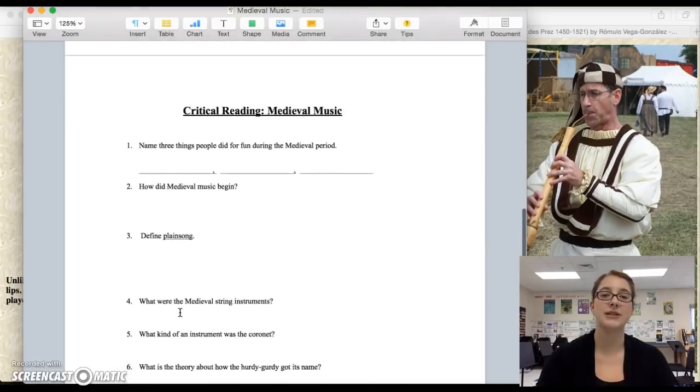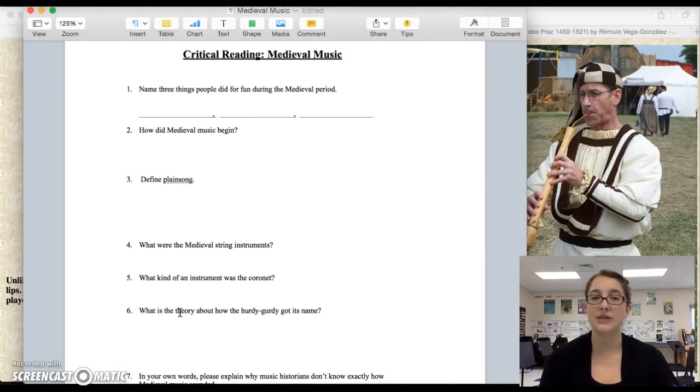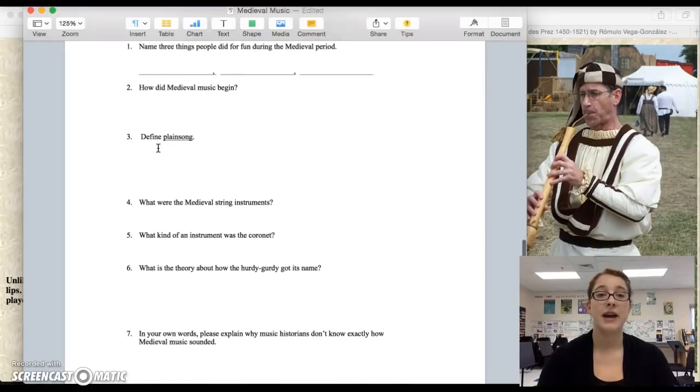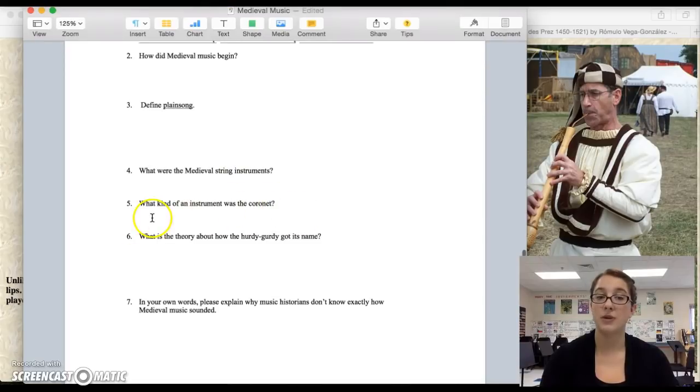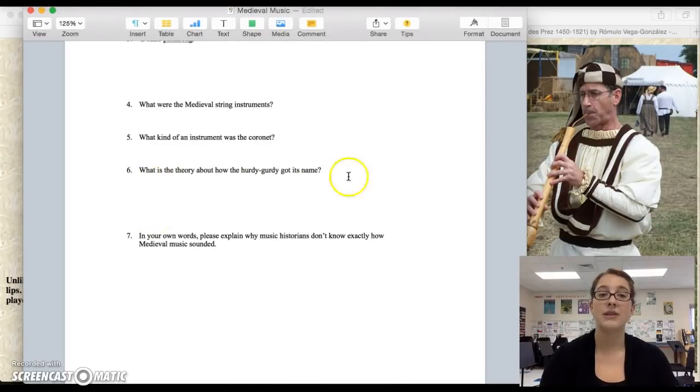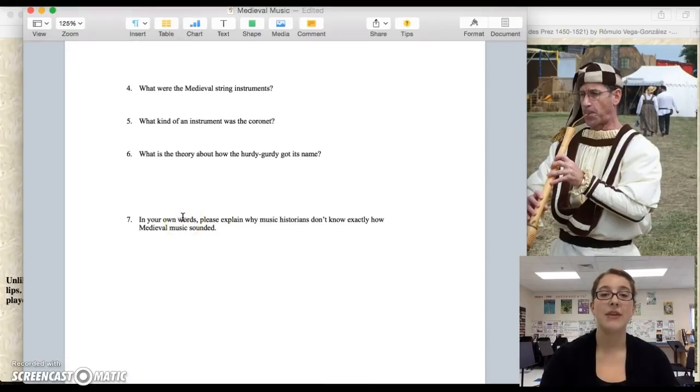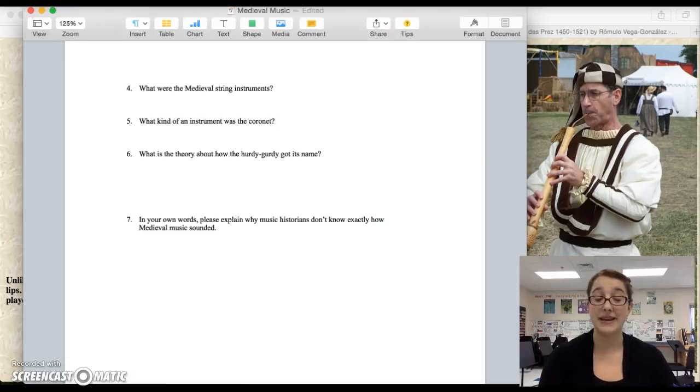So now let's go over to the questions. Three things people did for fun during the medieval period. How did medieval music begin? Maybe where or what kind of music it was. I'd like for you to define plain song for me. And then list some of our medieval string instruments. You can use some of the ones that we did in the video or some of the ones that are on there. What kind of instrument was the cornet? What is the theory about how the hurdy-gurdy got its name? And then I want you to use your own words and tell me why music historians don't know exactly how medieval music sounded. Alright, and next up is the Baroque period.